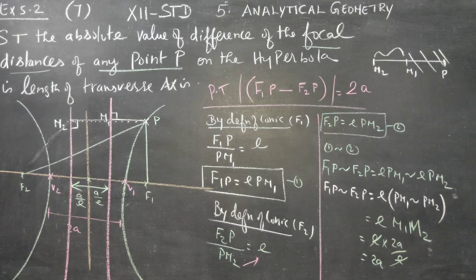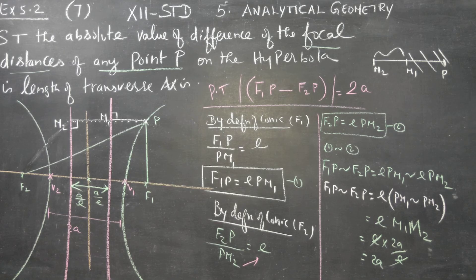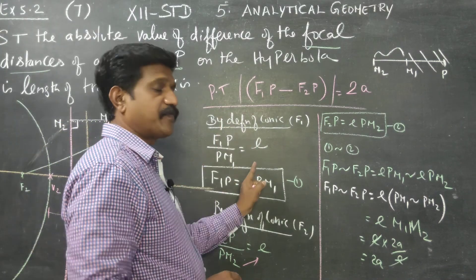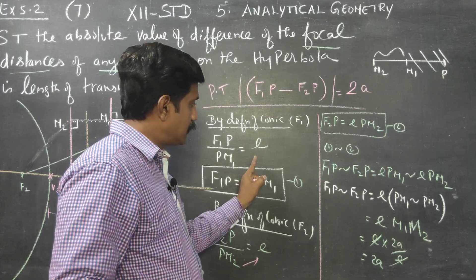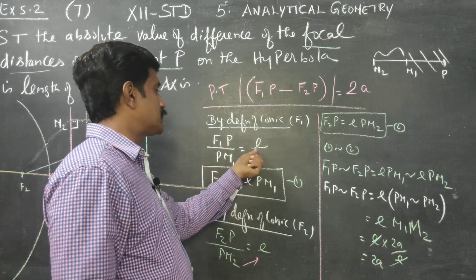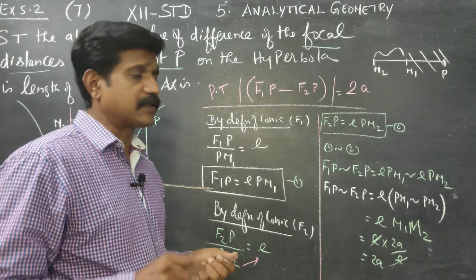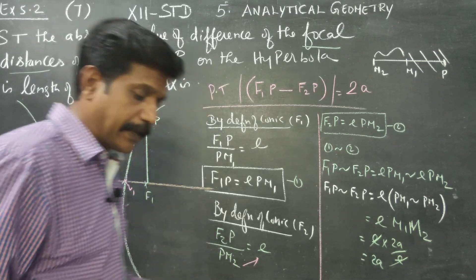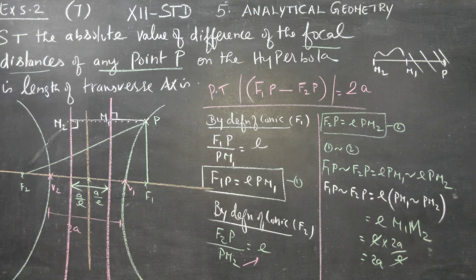In summary: the definition of conics is the ratio between the distance of a point from the focus and the perpendicular distance of the point to the directrix. This ratio is called eccentricity. The same formula F1P / PM1 = E applies to parabola, hyperbola, and ellipse. Thank you.